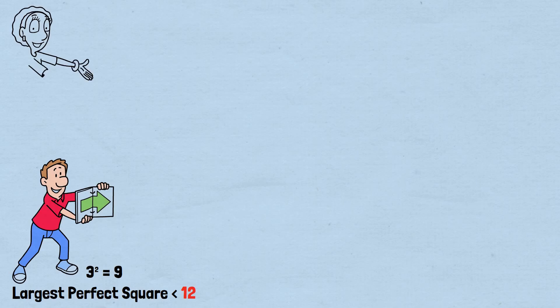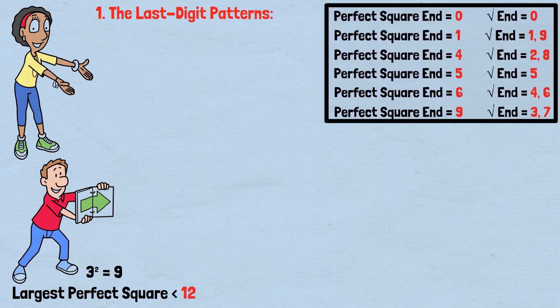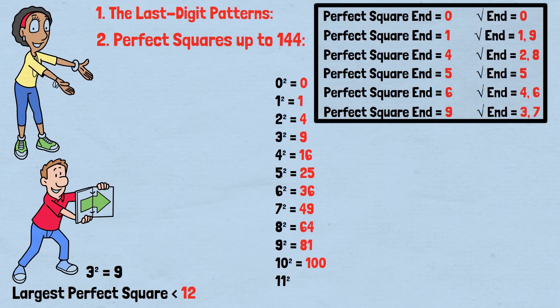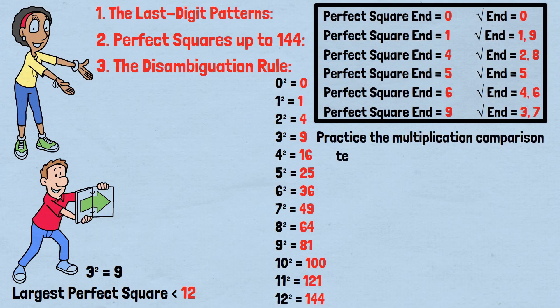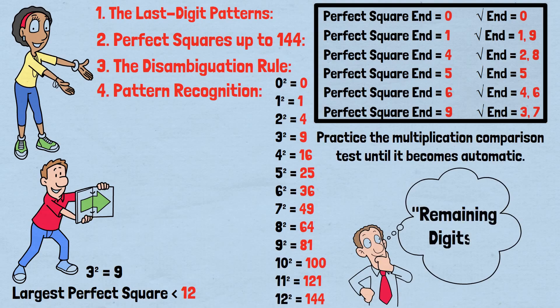To become truly fluent with this technique, focus on internalizing these key elements: 1. The last-digit patterns. Memorize which ending digits correspond to which possible square root endings. 2. Perfect squares up to 144. Know the perfect squares of 1 through 12 instantly. These are the building blocks of the entire method. 3. The disambiguation rule. Practice the multiplication comparison test until it becomes automatic. 4. Pattern recognition. Train yourself to quickly identify the remaining digits after crossing out the last two digits.